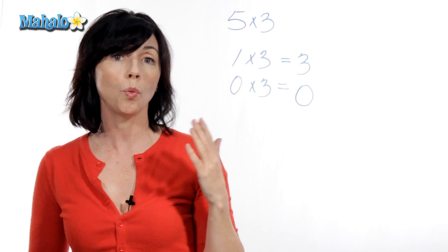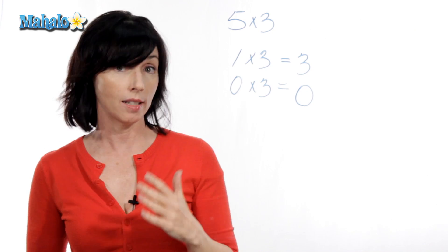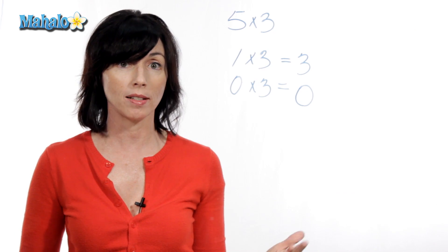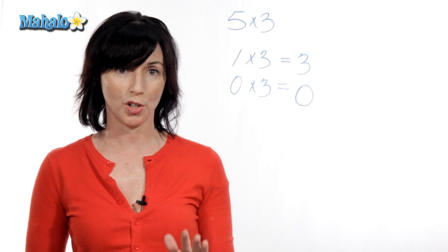What's important to understand is that any time you multiply any number by one, you just get that number back again. And any time you multiply any number by zero, you always get zero. So, one times 2,000 is 2,000. Zero times 2,000 is zero. It's always true.